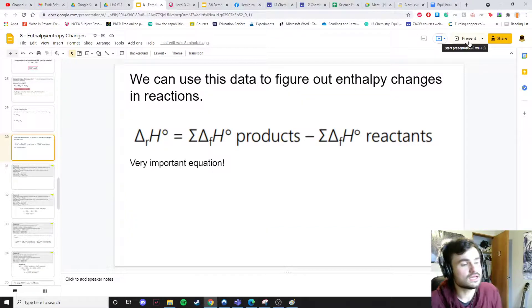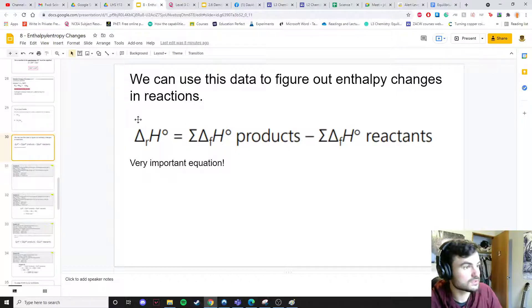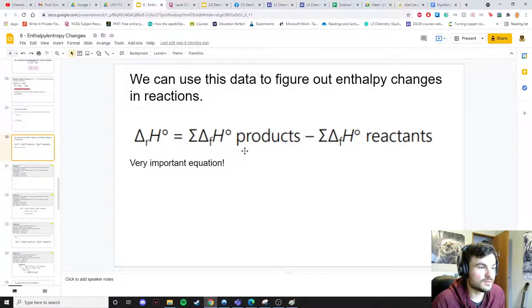We can use this data to figure out enthalpy changes in reactions. What this is saying is the delta H for our reaction can be calculated by summing the delta H of formation for the products minus the delta H of formation for the reactants.